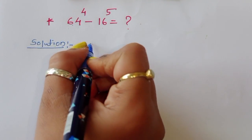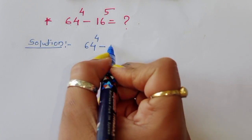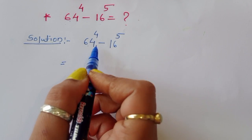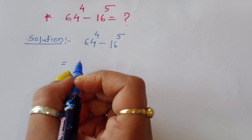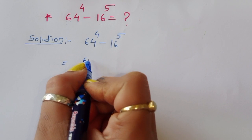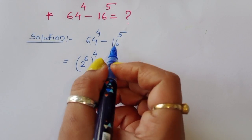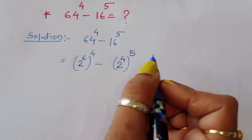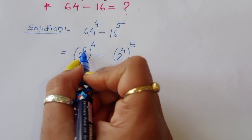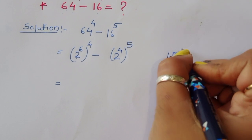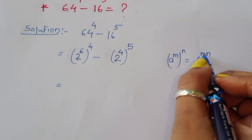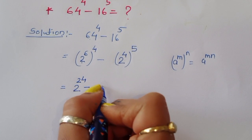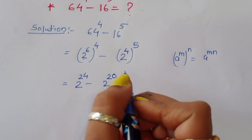64 power 4 minus 16 power 5. We convert 64 into a power of 2: 64 is 2 power 6, so we get 2 power 6, power 4. Then 16 is 2 power 4, so we get 2 power 4, power 5. Using the formula a power m power n equals a power m times n: 6 times 4 is 24, and 4 times 5 is 20. So we get 2 power 24 minus 2 power 20.